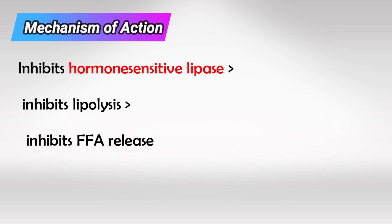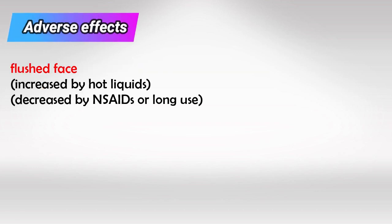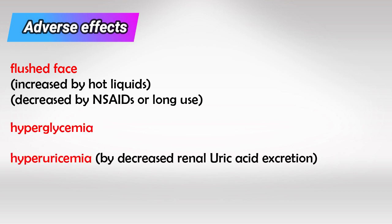Niacin works by inhibiting hormone-sensitive lipase, which inhibits lipolysis and decreases free fatty acid release. It mainly decreases VLDL. The side effects for niacin are very important: it causes flushing, which increases with drinking hot liquids like coffee and decreases with long-term use or NSAIDs. It also increases uric acid and glucose in the blood.